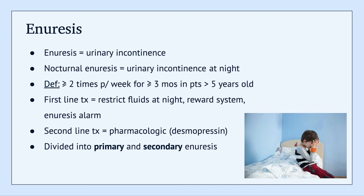Enuresis is urinary incontinence. When this occurs at night, it's referred to as nocturnal enuresis. To diagnose enuresis, you need to have two or more episodes of urinary incontinence per week for a period of three months or greater in a patient who is older than five years old.